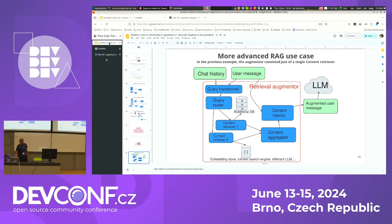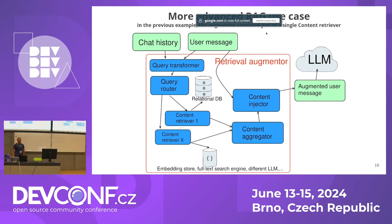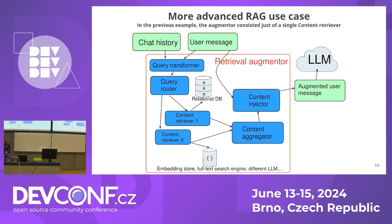That was an extremely simple example using one content retriever backed by an embedding store. Content retrievers don't have to always use embedding stores — they can use a relational database. You can also have multiple content retrievers, called hybrid search, combining full-text search or different LLMs. You aggregate the results with a content aggregator, and then a content injector injects the aggregated content into the user message to produce the augmented user message.